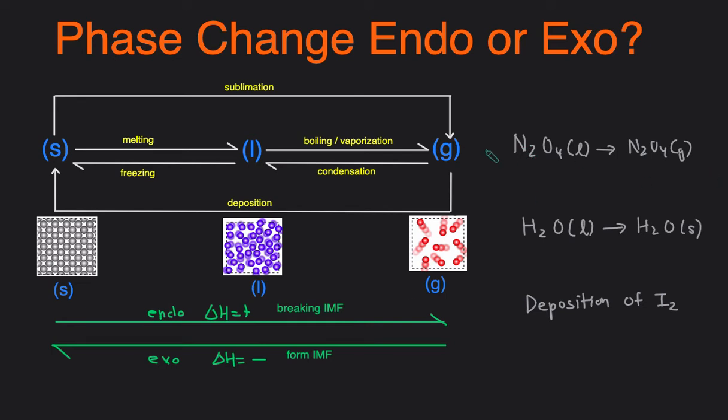Let's take a look at a couple examples. We have three reactions right here. Let's determine if these phase change reactions are endo or exo. So first one, N2O4 liquid to gas, so we can see it's going from a liquid to a gas, so it's going to the right, so you're breaking IMFs, so the delta H will be positive, and this will be an endothermic reaction.